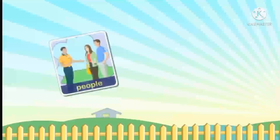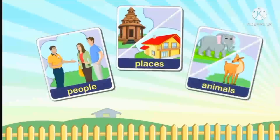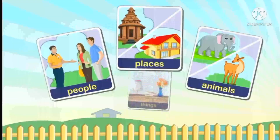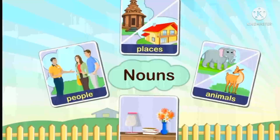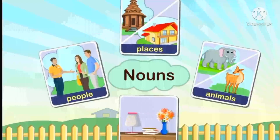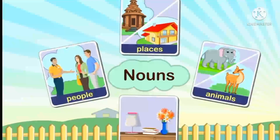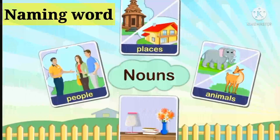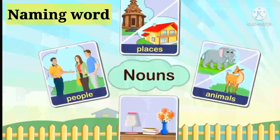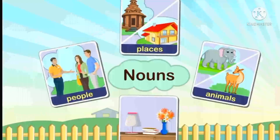The name of people, places, animals, and things are called nouns. Bachos, people ki name, places ki name, animals ki name, aur things ki name ko haam nouns kehte hain. Nouns is also known as naming word. Nouns ko haam naming word bhi kehte hain.